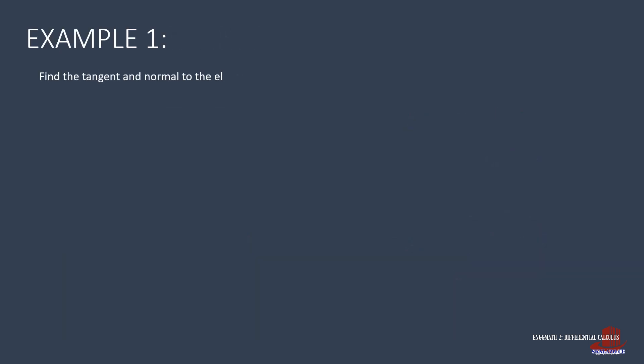Let's work on the first example of finding the tangent and normal lines to the ellipse with the equation 4x² + 9y² = 25 at point P with coordinates (2, -1). We find the first derivative of the equation to generate the slope m, which we know as y-prime.